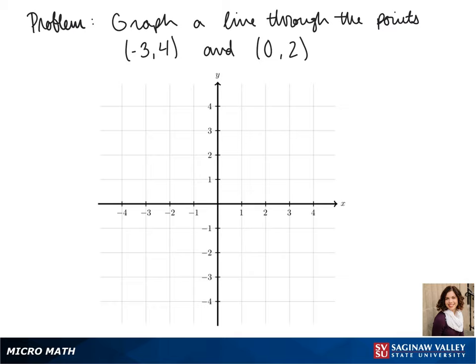Welcome to another day of algebra. Today we'll be graphing a line through the points negative 3, 4 and 0, 2. Our first step is to go 3 back on our x-axis and up 4 on our y. That gives us negative 3, 4.